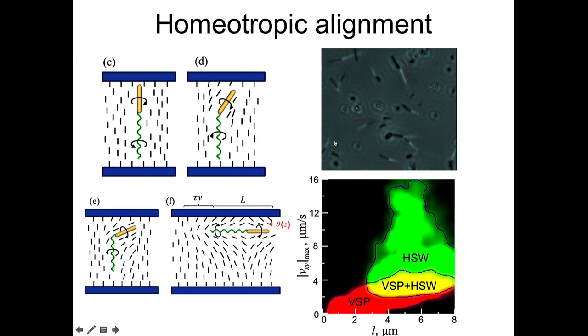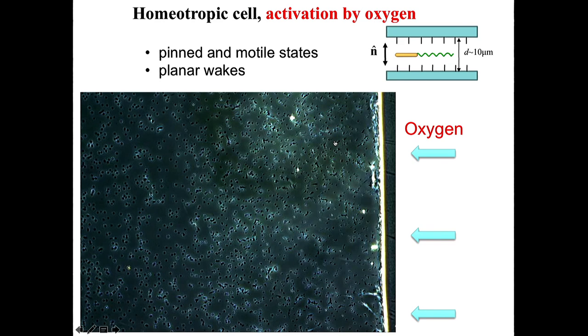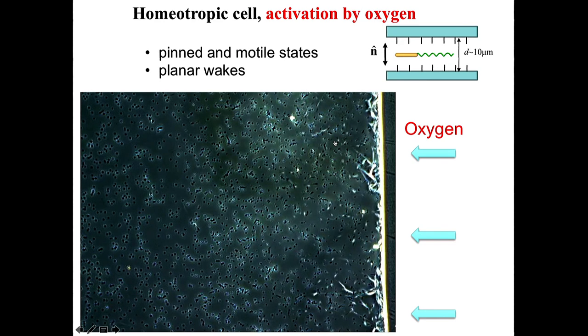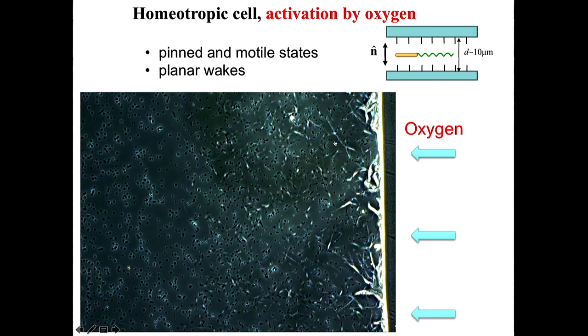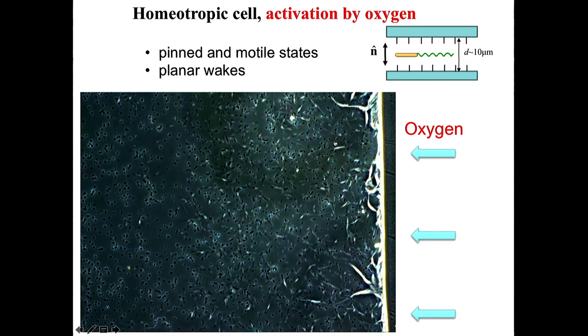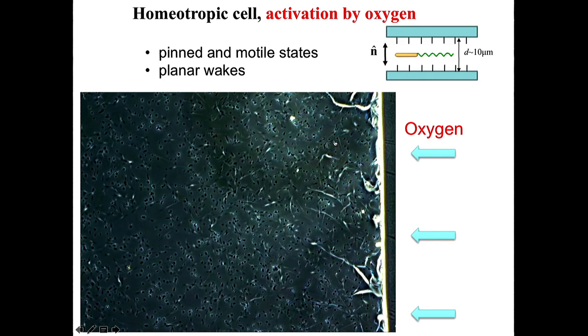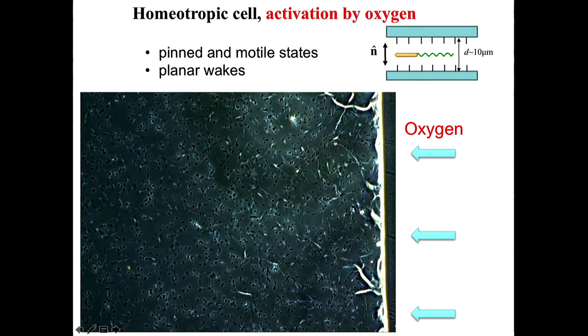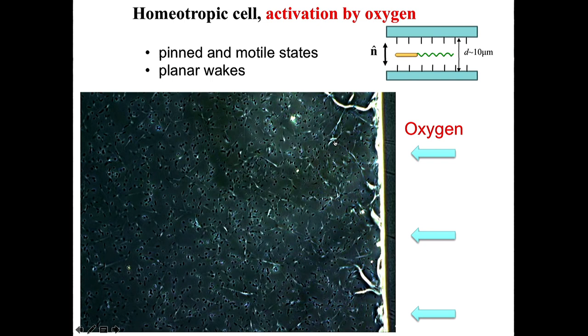But some bacteria, if they're relatively long and more importantly, if they're powerful enough, they can escape this vertically trapped state and become swimming horizontally. For example, in this video, you see that now most of the bacteria are vertical, but then we introduce oxygen to the system, they start to swim, and they escape this vertical state and start to swim horizontally.